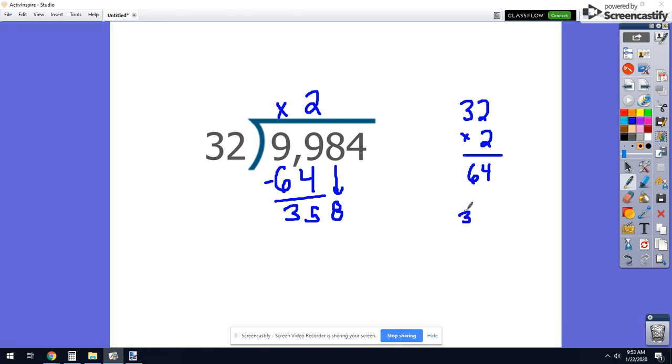I think that's going to be 11 times, so I'll multiply to check. 1 times 2 is 2. 1 times 3 is 3. Put down my placeholder. 1 times 2 is 2. 1 times 3 is 3. When I add those up, I'm going to get a sum of 352, so that's awfully close.